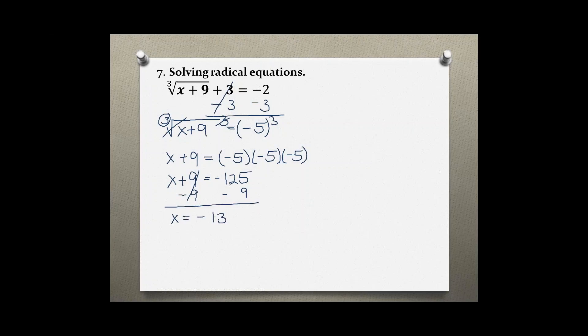Now just to make sure we should always check our final answer by plugging it back into the original problem. The cube root of negative 134 plus nine plus three should be equal to negative two.